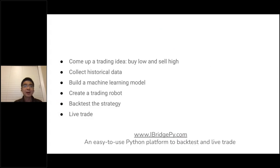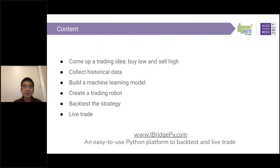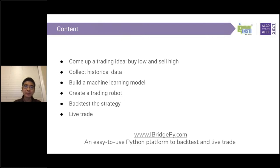Here is the content of today's presentation. First, I'm going to come up with a trading idea — I call it the buy low and sell high trading idea. After I have the trading ideas, I need to validate them by collecting historical data and building a machine learning model. After I have the model, I can run it to see past performance. If I feel happy about the result, I will create a trading robot in iBridgePy. iBridgePy is able to backtest your strategy and then live trade.